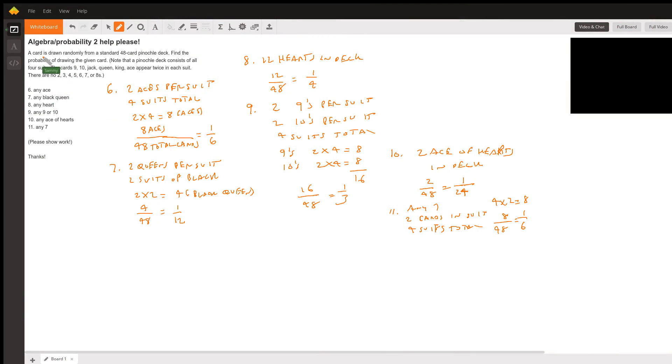Hey there, this is Sammy. The question is: a card is drawn randomly from a standard 48-card pinnacle deck. Find the probability of drawing the given card. Note that a pinnacle deck consists of all four suits. The cards 9, 10, Jack, Queen, King, Ace appear twice in each suit. There are no 2, 3, 4, 5, 6, 7, or 8s.